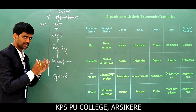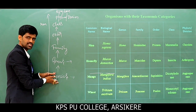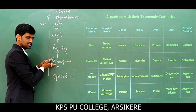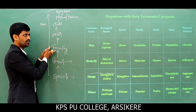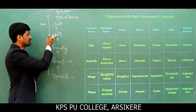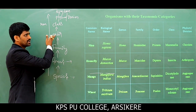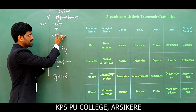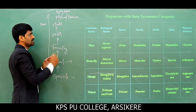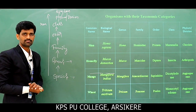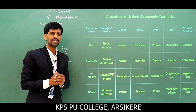Let us revise the example of Man: species name — sapiens; genus name — Homo; family name — Hominidae; order — Primata; class — Mammalia; phylum — Chordata; kingdom — Animalia.